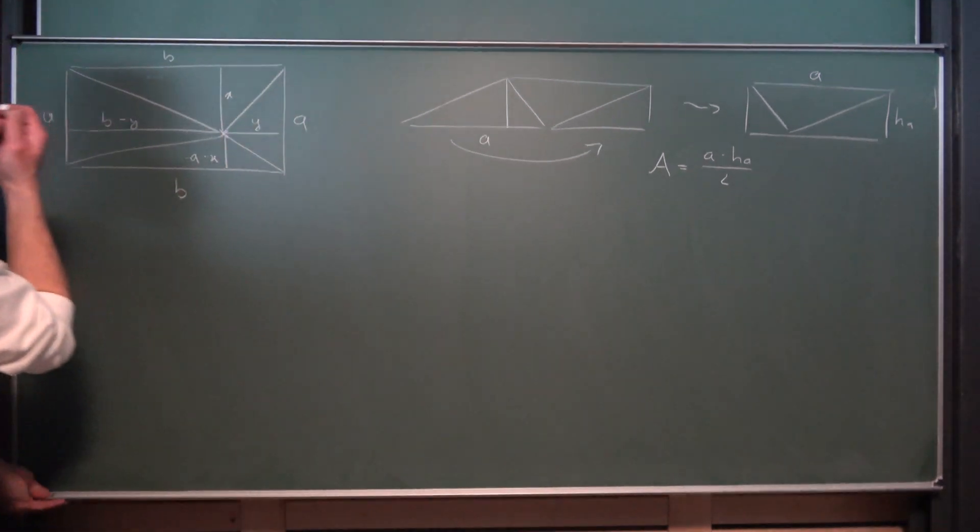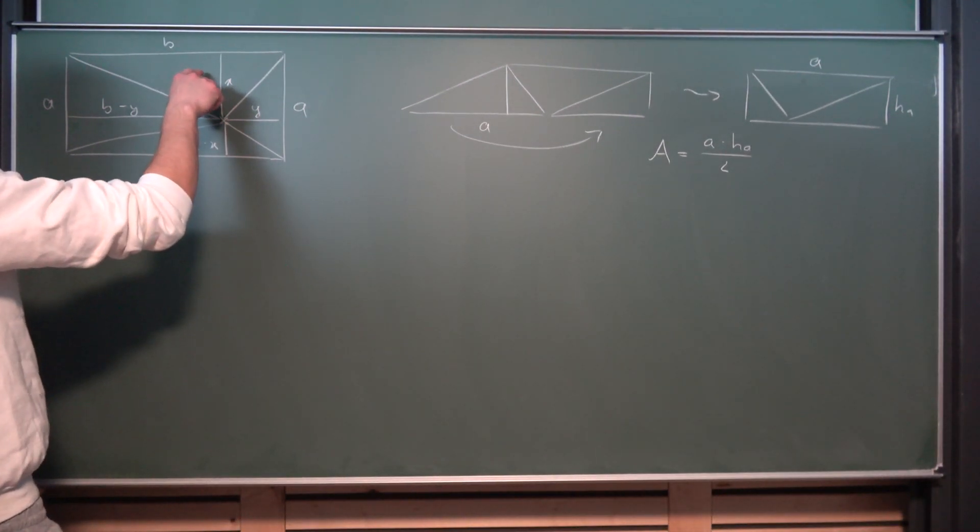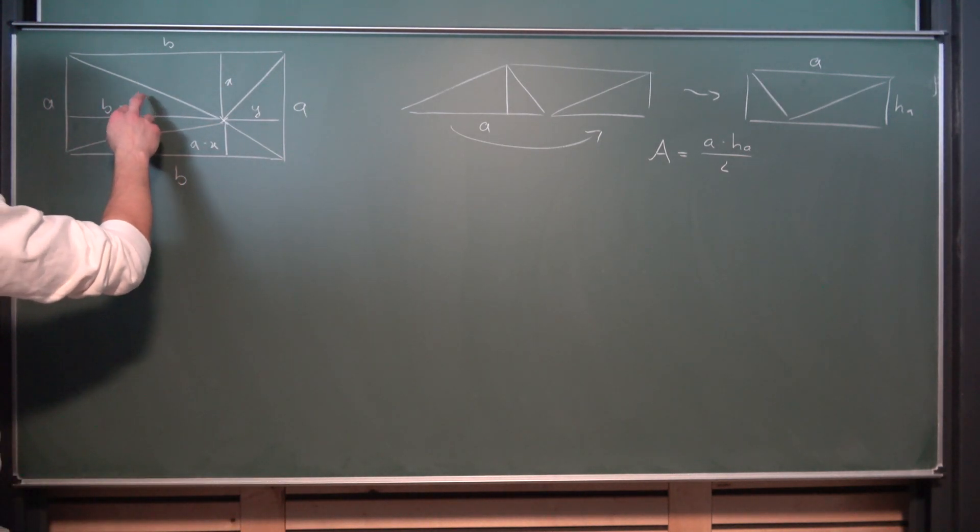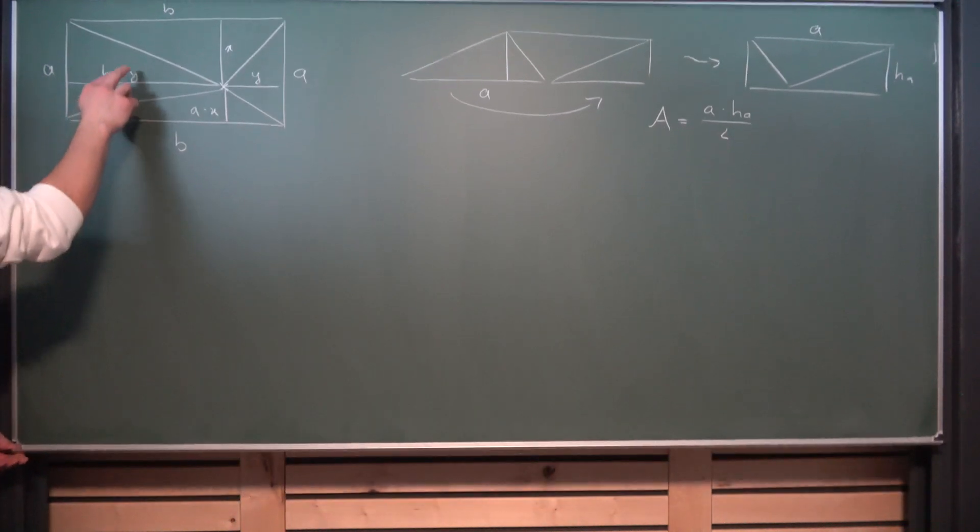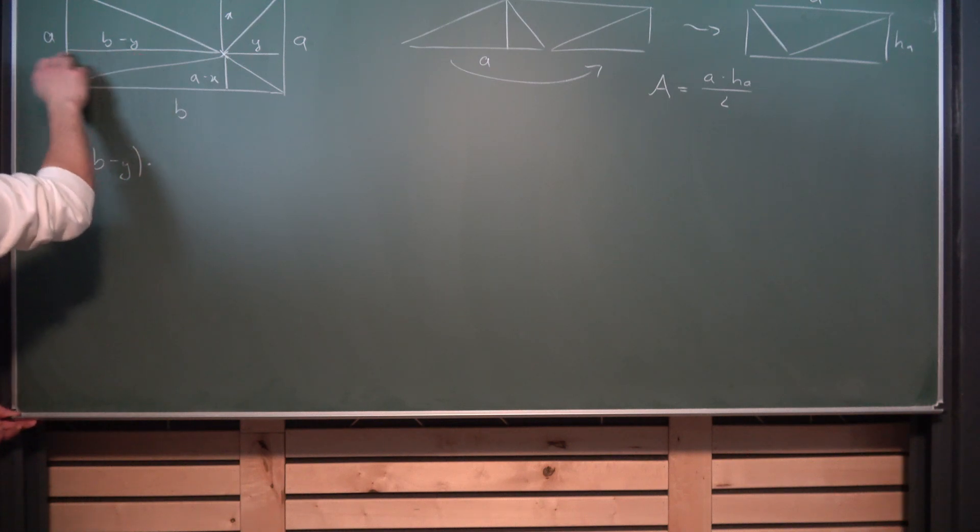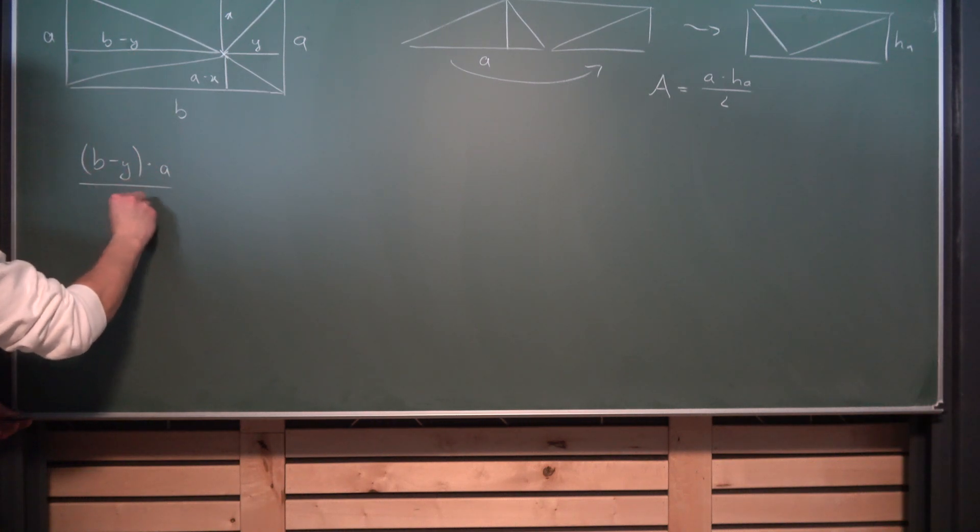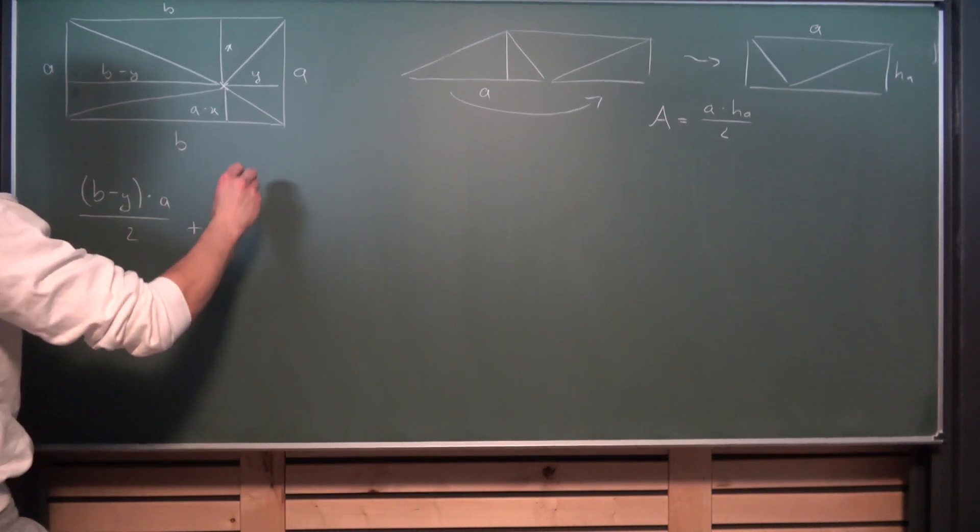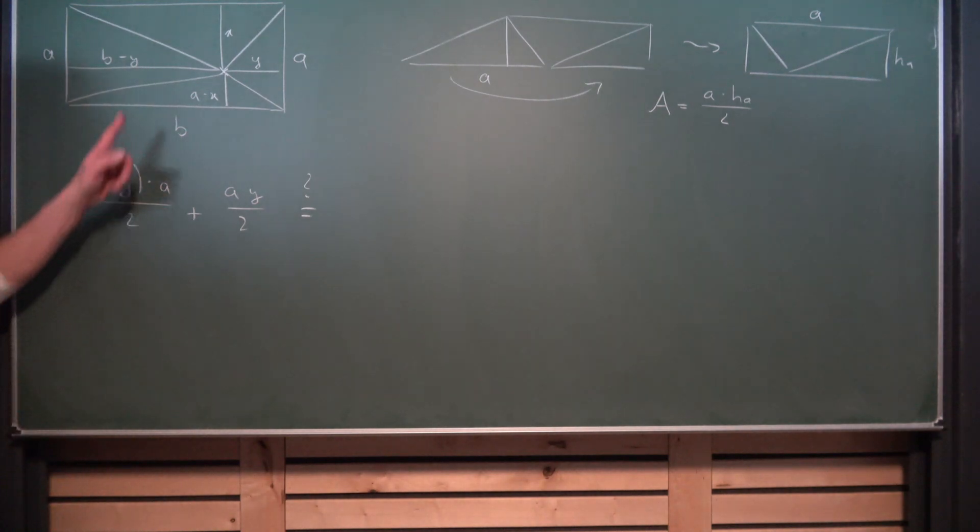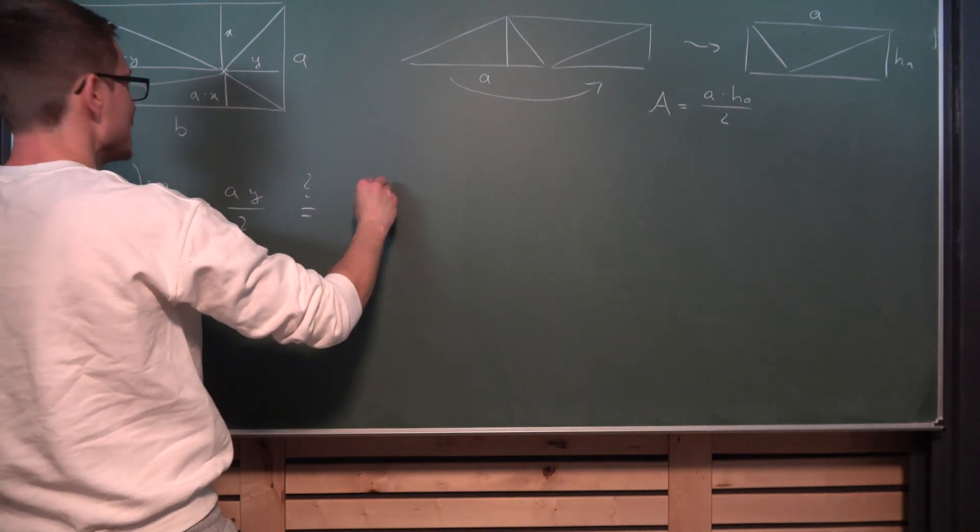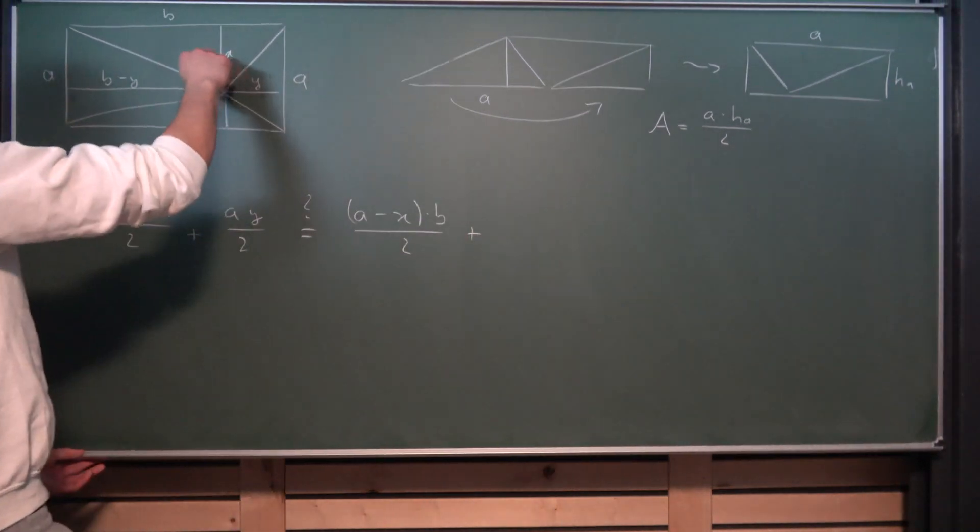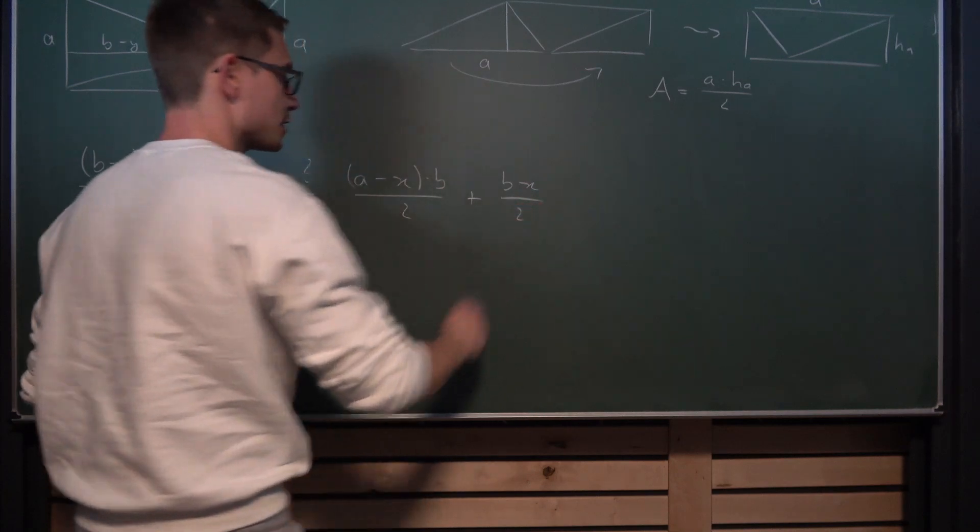And remember what you want to show. We want to show that the areas of those opposite triangles added together is going to be the same overall. So let's start with those from the left and right. The area of this triangle here is going to be (B minus Y) times A divided by two plus the area of this triangle, A times Y divided by two. And we want to show if this is equal to the area of this triangle, (A minus X) times B divided by two plus B times X divided by two.